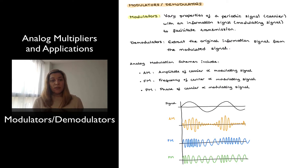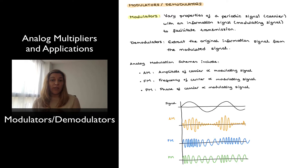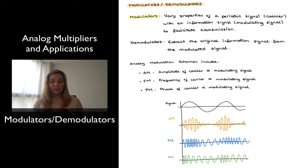Once the signals are transmitted, the process at the other end is the opposite, or converse process, which is demodulation, which consists of extracting the information out of the signal.